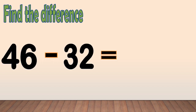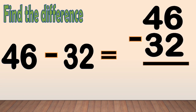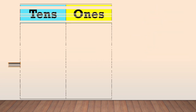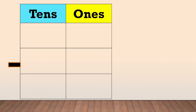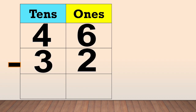Find the difference: 46 minus 32. First, arrange the numbers in columns like this. Place the digit of the number in a column based on its place value. 46 minus 32.